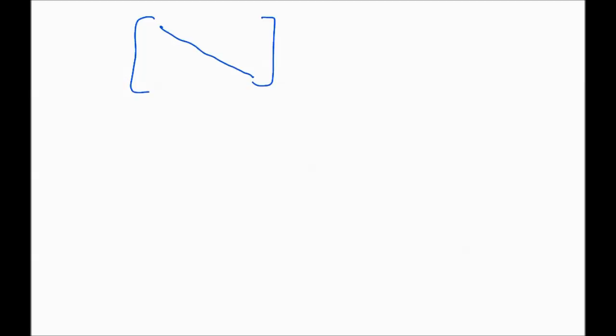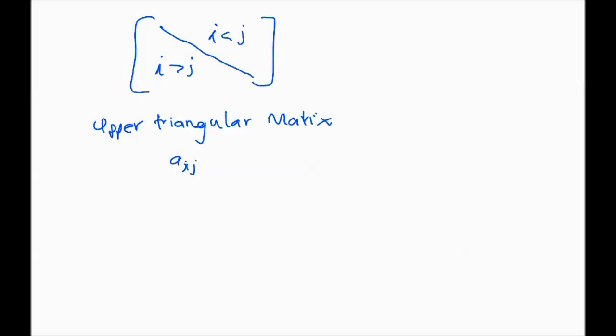Looking at a blank matrix structure, the diagonal divides the matrix into two regions: entries where i is less than j are above the diagonal, and entries where i is greater than j are below. For matrices where all entries below the diagonal are zero, we call those upper triangular matrices. An upper triangular matrix is defined as one where a_ij equals zero if i is greater than j.